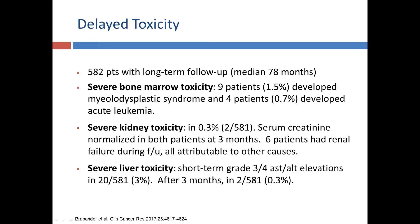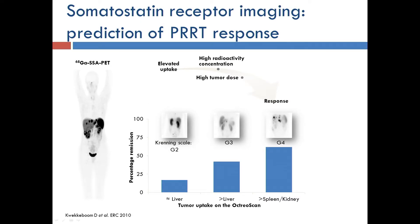Liver toxicity is almost never seen. Perhaps not surprisingly, there's a correlation between the amount of somatostatin receptor expression — measured either on the OctreoScan or, more recently, on the gallium-68 dotatate scan — and response. The more strongly we see receptor expression, the more likely the patient is to respond to this type of treatment. So that's a good predictive marker.